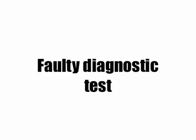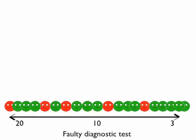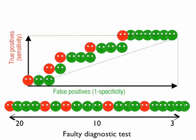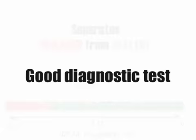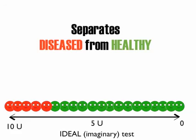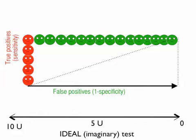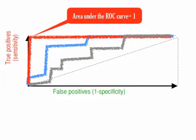Now imagine a faulty diagnostic test, just to compare. With a faulty test, we have this distribution of patients. As you can see, there are diseased patients distributed among healthy patients, so we cannot differentiate between them. A good diagnostic test separates disease from healthy — the diseased patients will be to the left and the healthy patients to the right. This is an ideal test, of course. All of these patients will be correctly classified as true positives, and the false positives will be to the right. You obtain a perfect ROC curve, whose area under the ROC curve is 1 — the best test you can ever obtain.